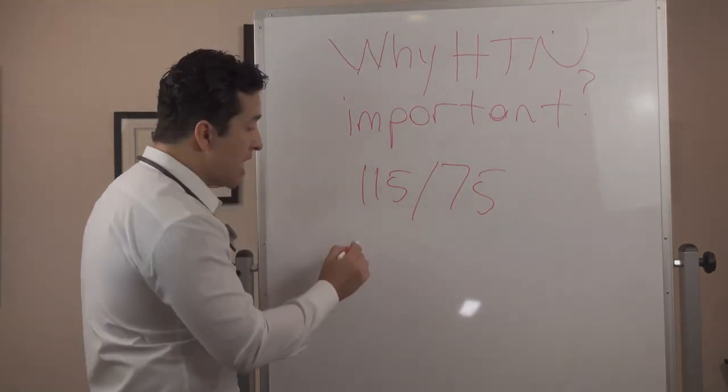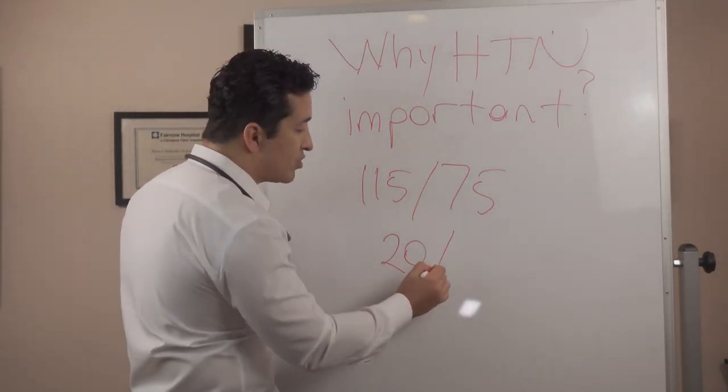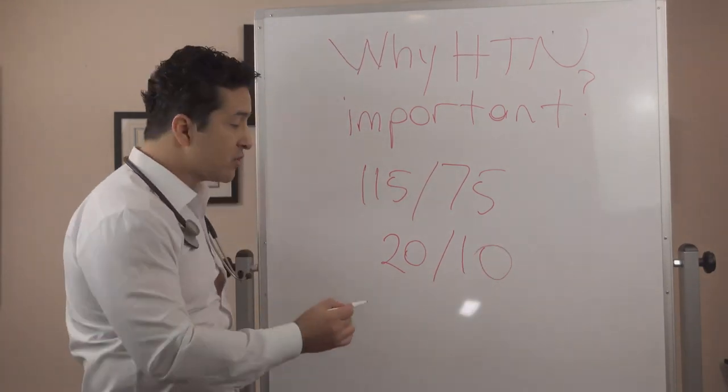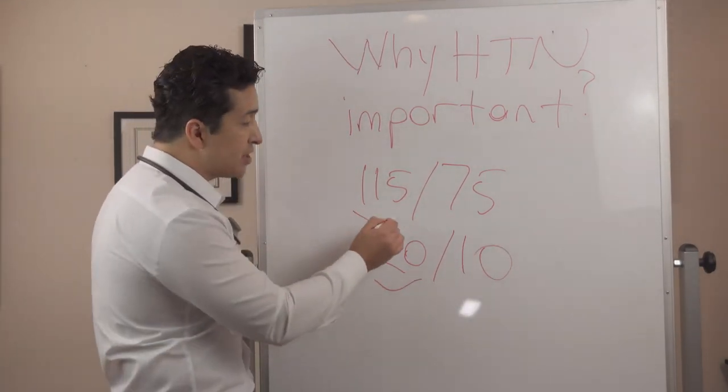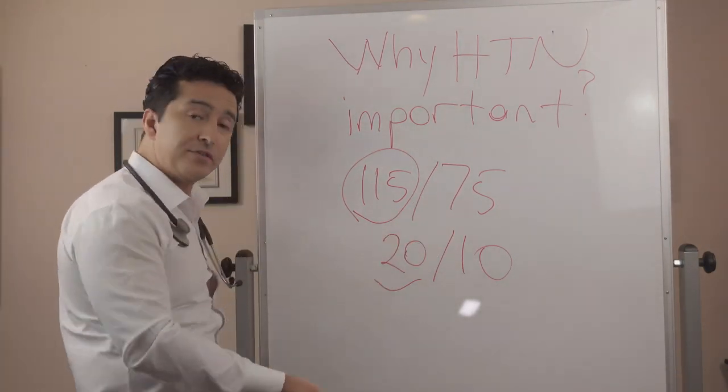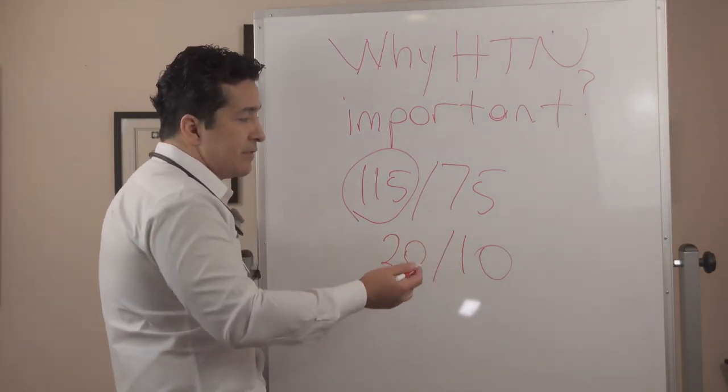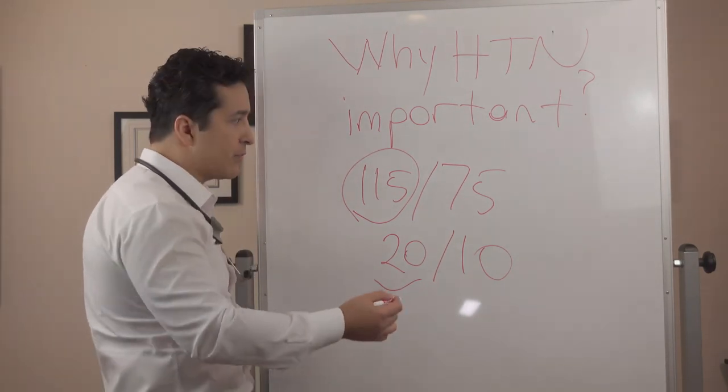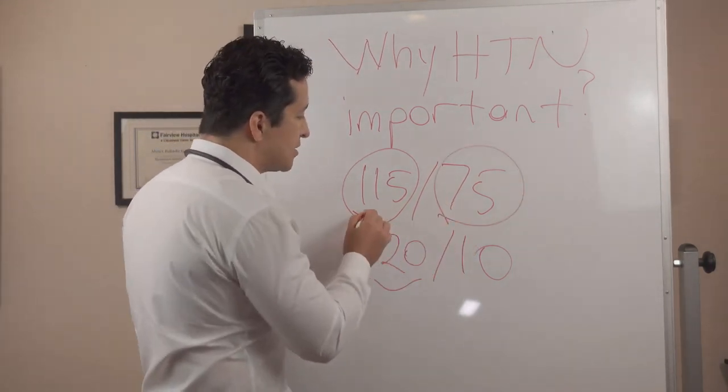So basically, the blood pressure difference between 115 over 75, after this blood pressure, every 20 over 10, every 20 on systolic blood pressure, which is systolic is this part, the first number. When you read this, you say 115 over 75. This is diastolic. This is systolic. This is the pressure when your heart beats.